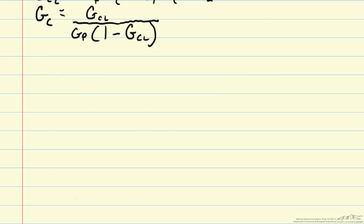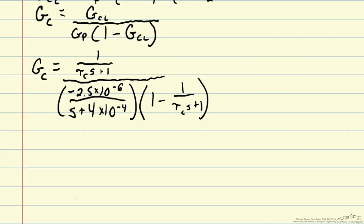So now for the blending process we can go ahead and calculate gc for the gp associated with the blending process and our desired closed-loop transfer function. So we can divide that by our process transfer function. We can multiply through top and bottom by our denominators in the denominator.